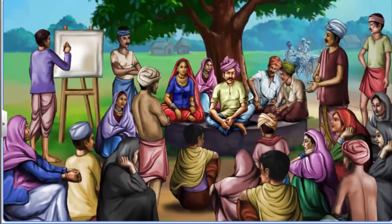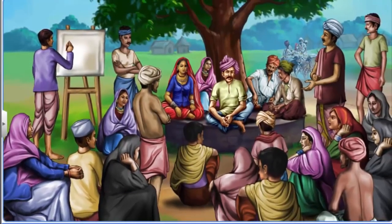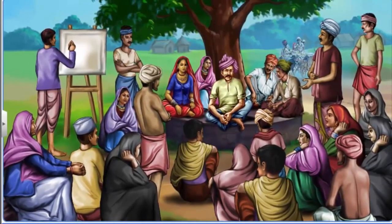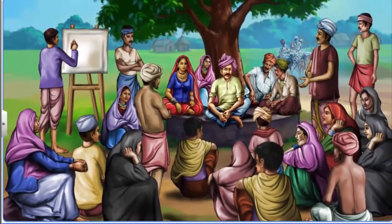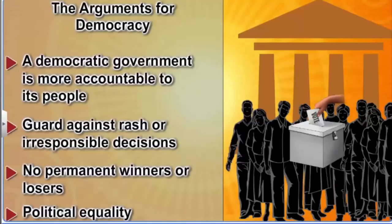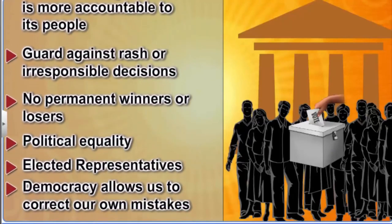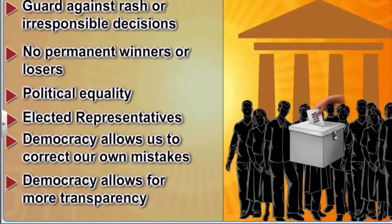For example, in relatively small communities like a gram sabha, all the members can sit together and make decisions directly. The features of democracy that we discussed in earlier modules provided a basic foundation for our understanding of democracy.